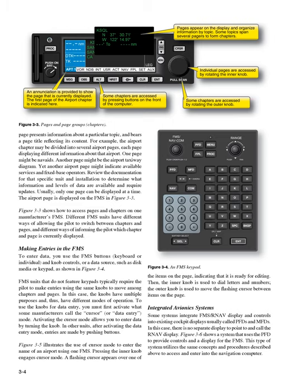Different FMS units have different ways of allowing the pilot to switch between chapters and pages, and different ways of informing the pilot which chapter and page is currently displayed. To enter data, you use the FMS buttons, keyboard or individual knob controls, or a data source such as disk media or keypad, as shown in figure 3-4. FMS units that do not feature keypads typically require the pilot to make entries using the same knobs to move among chapters and pages.